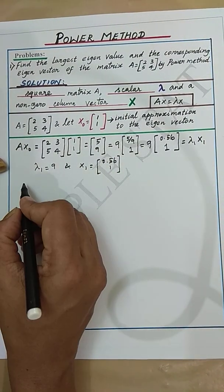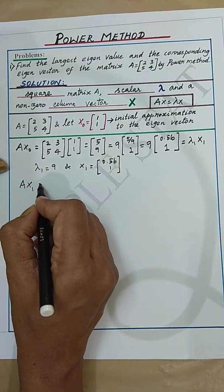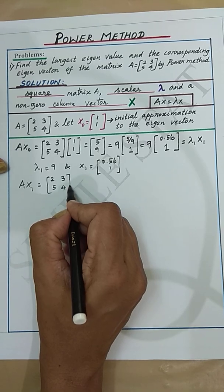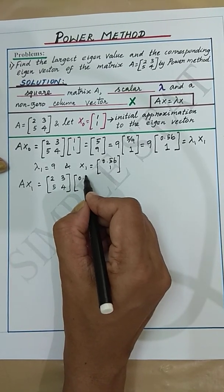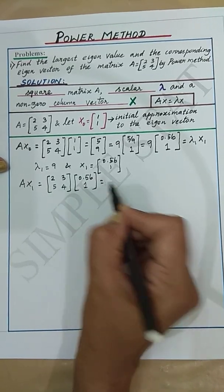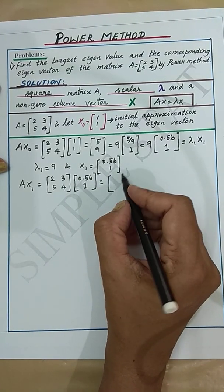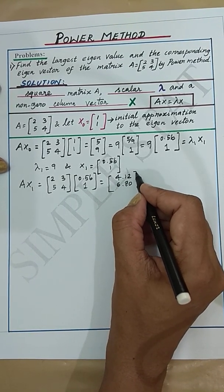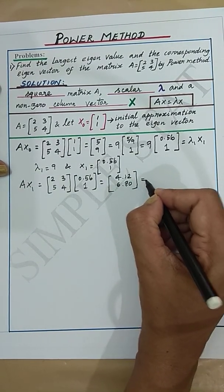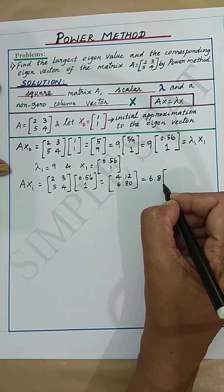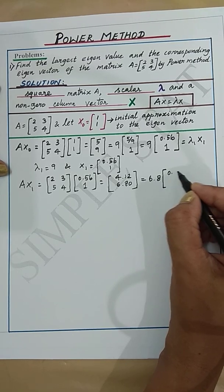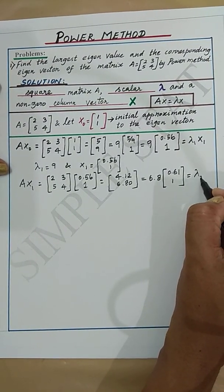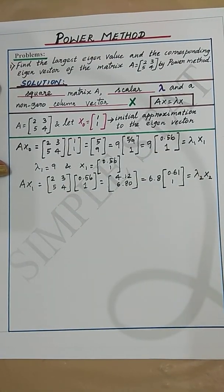The second iteration will be A into X1 which is [2 3; 5 4] into X1 which is [0.56; 1]. When we multiply these two matrices we get [4.12; 6.8]. Taking the largest value 6.8 outside the matrix we get 6.8 into [0.61; 1] which can be written as lambda 2 into X2.